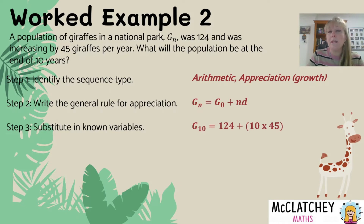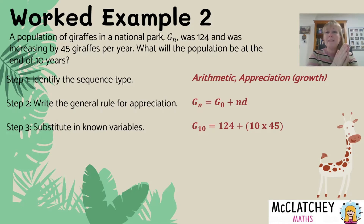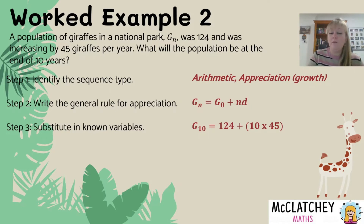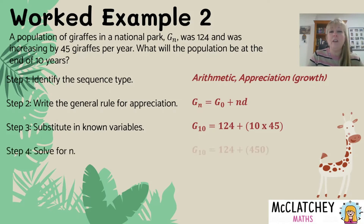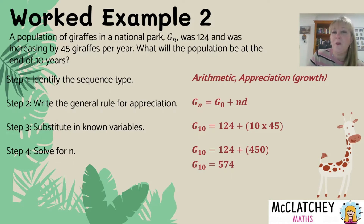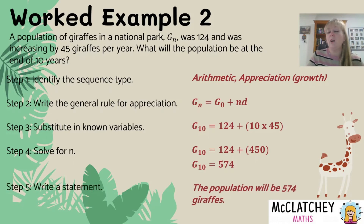We substitute in our known variables. G0 equals 124 giraffes, and we add 45 each year. At time zero we have 124; from there to the end of year one, we add another 45 giraffes. That's why we don't use the formula sheet model — it uses term one, not term zero. Solving for n, we find G10 equals 574. We need to write a statement because G10 isn't in the question — it's a worded problem. So: the population will be 574 giraffes at the end of 10 years.